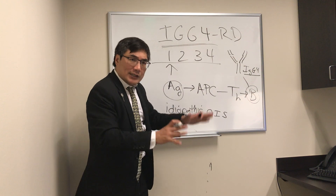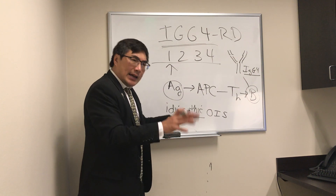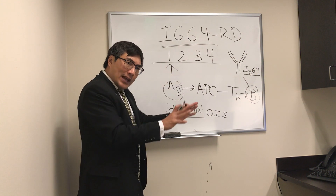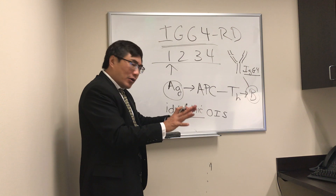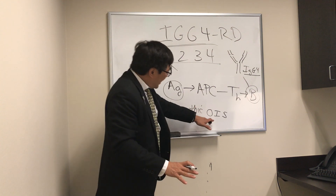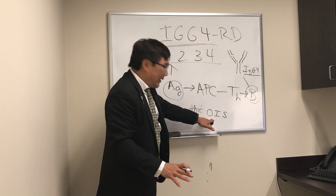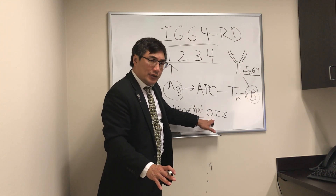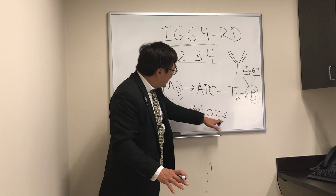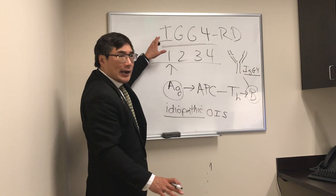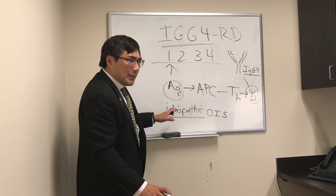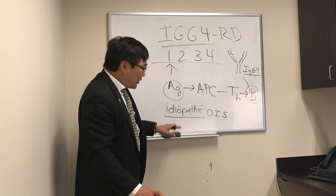When we see a patient who has proptosis, pain, and ophthalmoplegia, and their imaging study shows an inflammatory lesion in the orbit, even though that could be idiopathic orbital inflammatory syndrome, we still have to worry about IgG4. The only way to make the determination ultimately is with pathology.